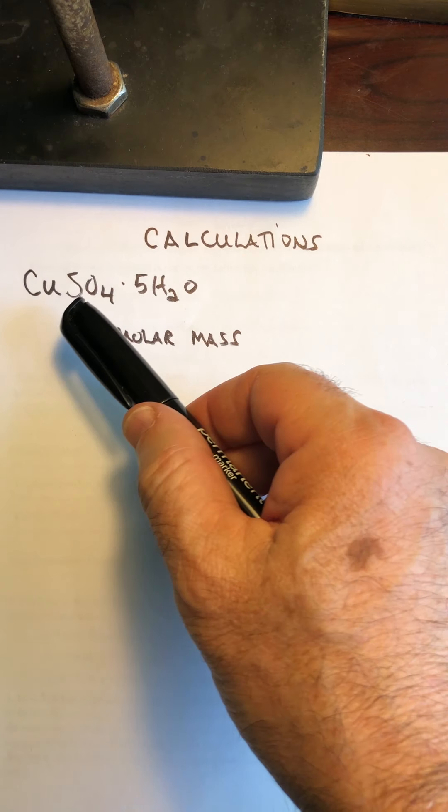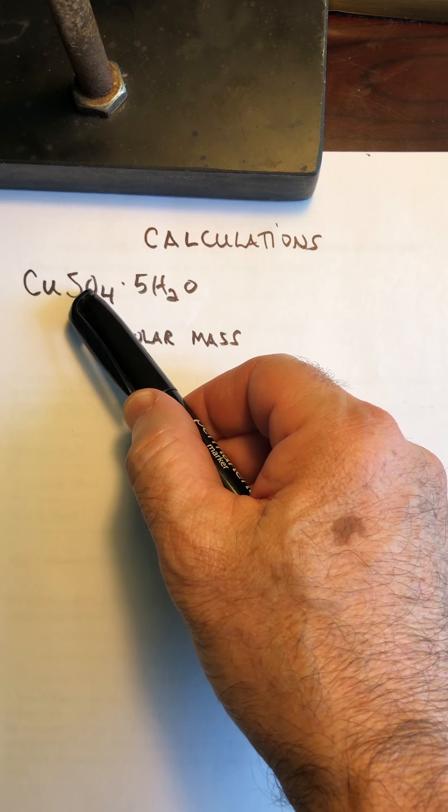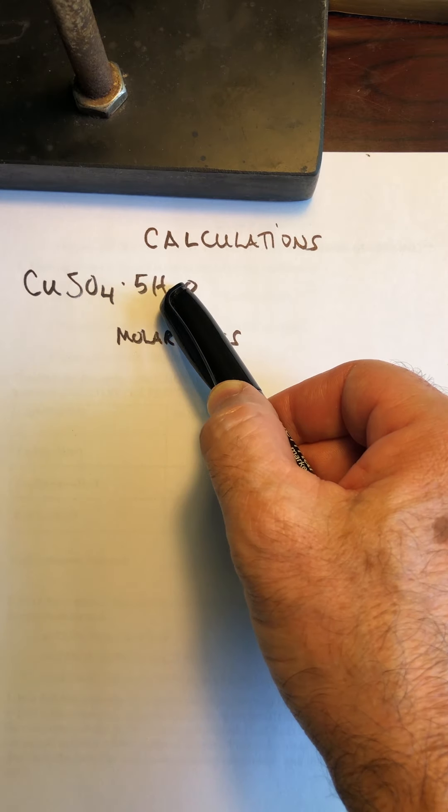You will notice that this compound is copper-2-sulfate. But this dot 5H2O means that it is a hydrate. If you look at the section in Chapter 3 of your textbook that we skipped in lecture, there is a series of compounds called hydrates.